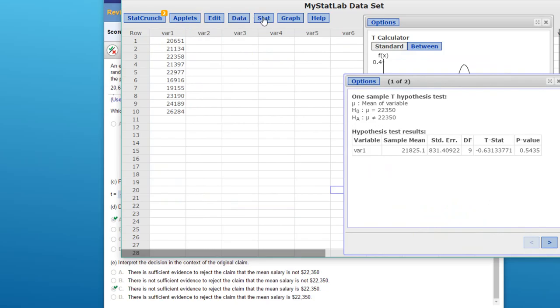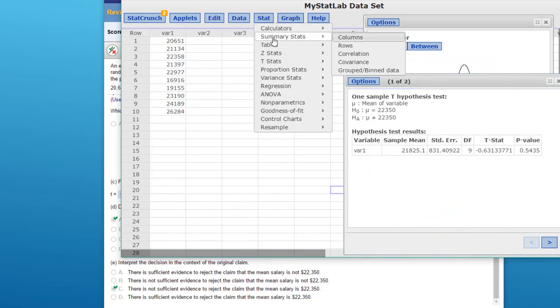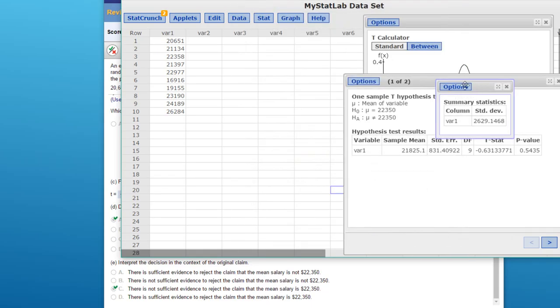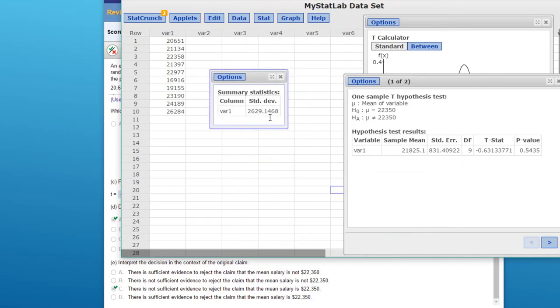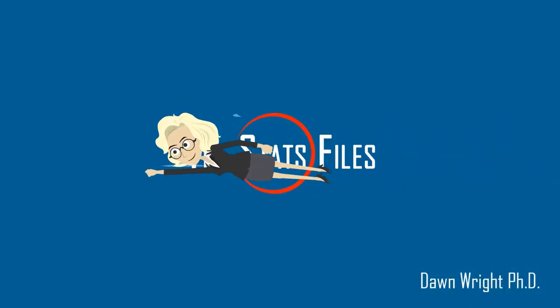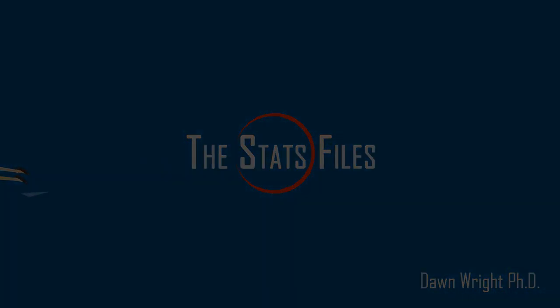And if you're curious about it, you can calculate that standard deviation yourself. Let's just go to Stat again, Summary Stats, Column, Variable 1, and I'm just going to select Standard Deviation this time, Compute. And there you have the standard deviation if you're trying to solve this thing longhand. So check it out for people.